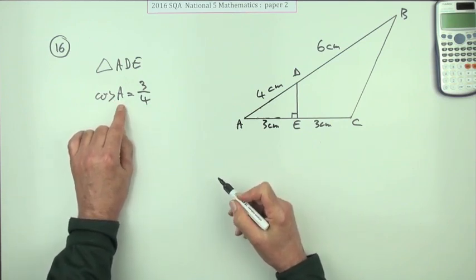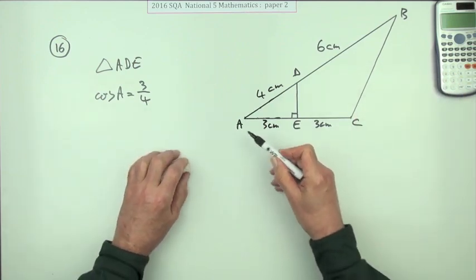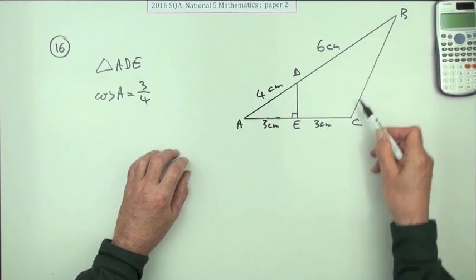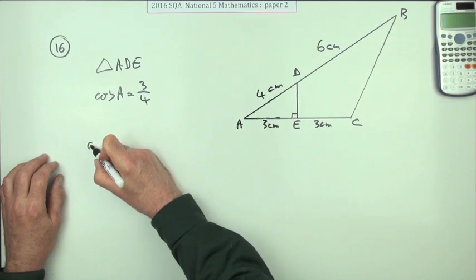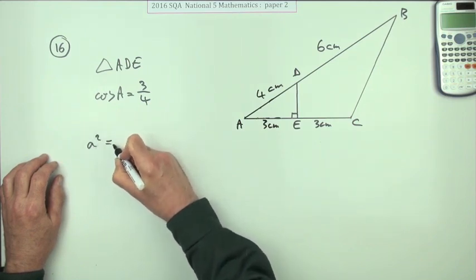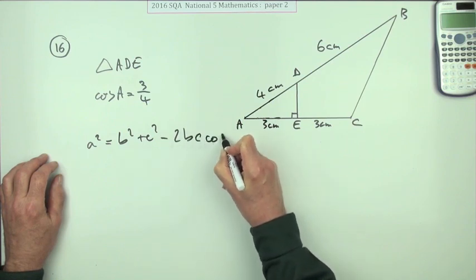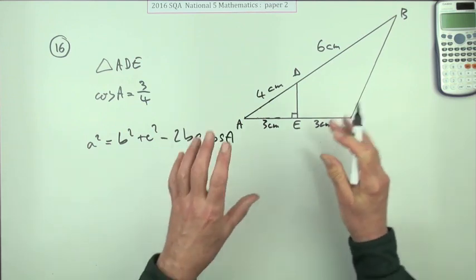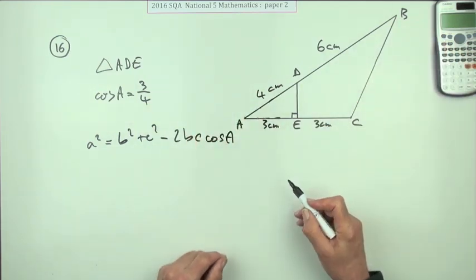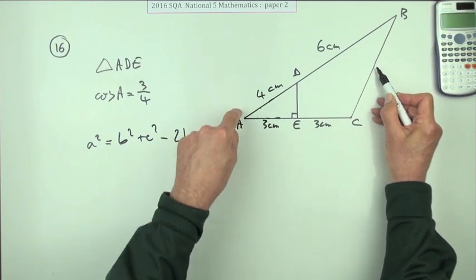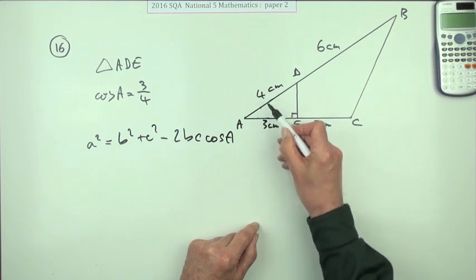To work out BC I'm going to use the cosine rule. This is exactly the configuration for the formula you get at the front. If you were to write down the cosine rule, you would write: a squared equals b squared plus c squared minus 2bc cos A. That side that you want is side a, and this cos A that you want is staring at you, hiding in plain view.